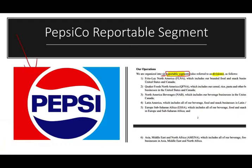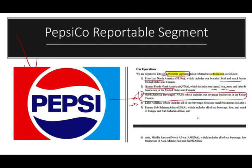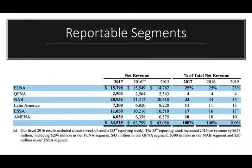Let's look at those divisions. They have the Frito-Lay division of North America, which includes food and snacks; the Quaker Foods of North America, which includes cereal, rice, and pasta; the North America Beverages division, which includes beverages in the United States and Canada — this is what you're most familiar with. They also have Latin America, which includes beverages, food, and snack businesses; the Europe and Sub-Saharan Africa division; and the Asia, Middle East, and North Africa division. The Frito-Lay division accounts for 25% of revenue, while beverages account for only 33%.